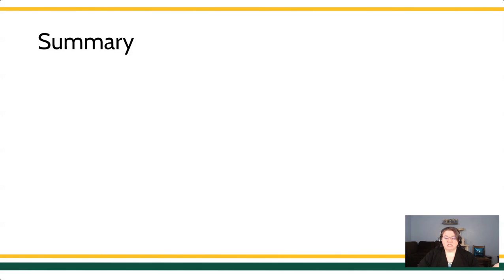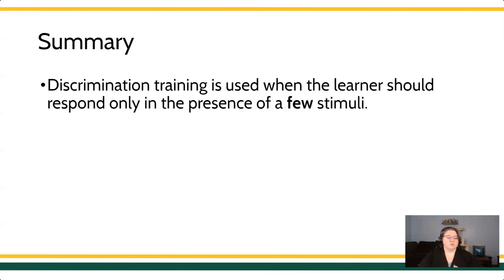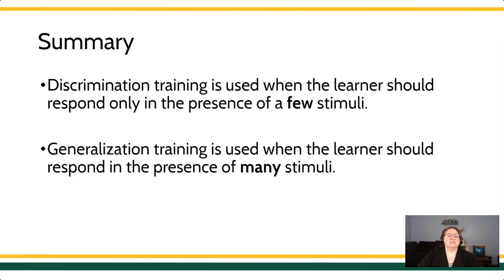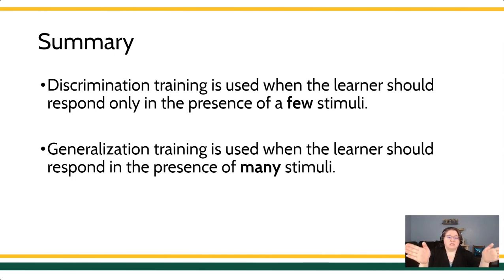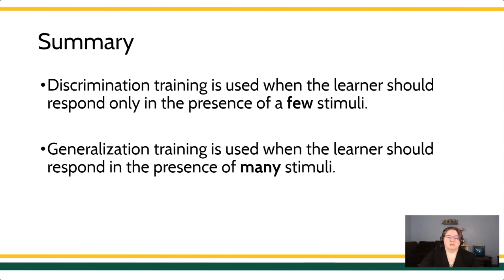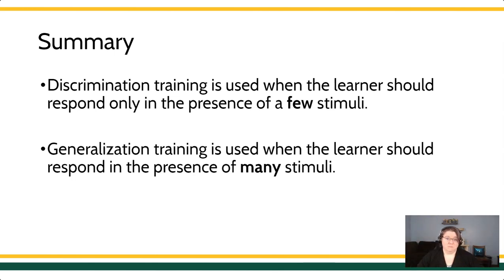Remember that we talked about discrimination training, where we're trying to narrow the range of stimuli that a learner will respond to. Generalization is exactly the opposite — we want to widen the range of stimuli people respond to. It's a question of: do you want to teach people to tell the difference between stimuli, or do you want to increase the likelihood that people emit a response in the presence of new stimuli? You select your training procedure based on your goals. In discrimination training, we reinforce only in the presence of a narrow range of stimuli; in generalization training, we reinforce in the presence of lots of different stimuli. We're going to come back next time and talk about generalization training.